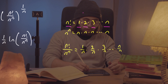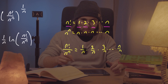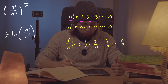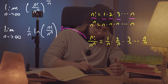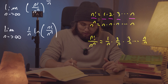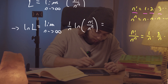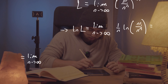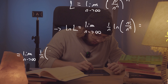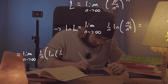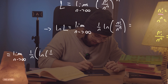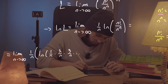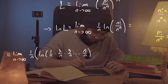So after doing all that, I can plug this into the natural logarithm. This limit of the natural log is going to equal the limit as n approaches infinity of one over n times the natural log of (1/n) times (2/n) times (3/n) all the way up to (n/n).